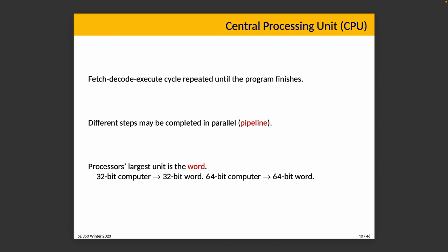Processors are described as 64-bit or 32-bit — that's about the word size, the processor's largest unit in terms of the size of a type it can operate on. A 32-bit computer implies a 32-bit word; a 64-bit computer implies a 64-bit word. But marketing can mess this up: the Nintendo 64, released in the 1990s, was not actually a 64-bit machine — it had two 32-bit processors. But 64 sounded better than 32 for marketing.